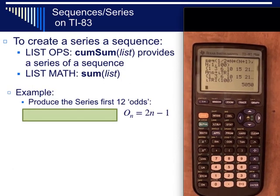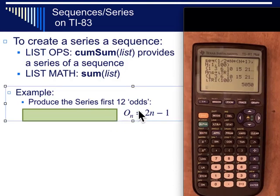Another tool that's kind of useful is the cumulative sum tool. This produces a series from a list. Essentially it adds up the numbers in the list and so if we want to create that list we'll find in the list ops cum sum and use that. If we just want the total of the list and we don't care about all the steps in between we could just do sum of list. And so let's try a moment to come up with the series for the first twelve odd numbers.